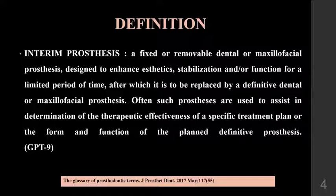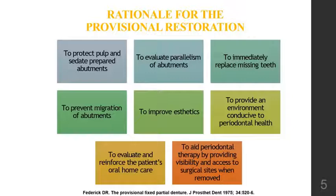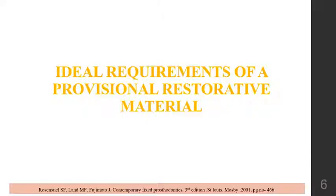According to GPT-9, an interim restoration is a fixed or removable dental prosthesis designed to enhance aesthetics and stabilize function for a limited period of time, after which it is replaced by a definitive dental prosthesis. The rationale for provisional restoration includes: protecting the pulp, evaluating the parallelism of the abutments, immediately replacing missing teeth, preventing migration of abutments, and improving aesthetics.